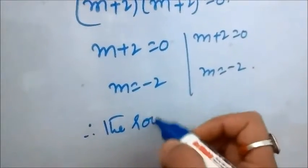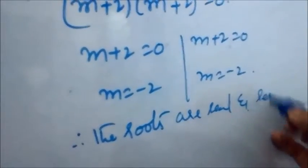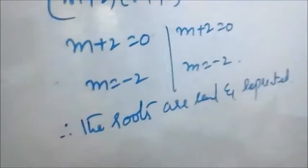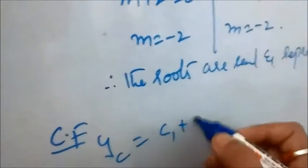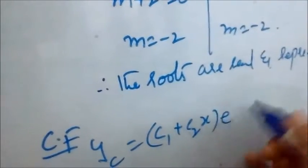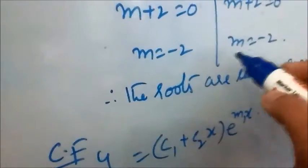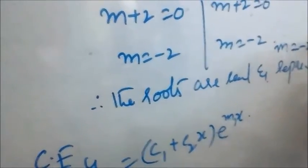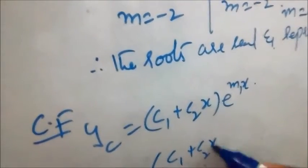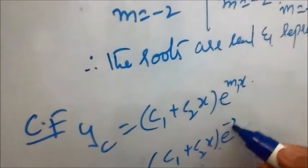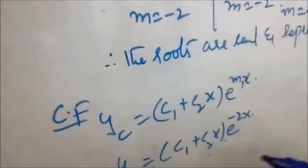Since the roots are real and repeated twice, our complementary function will be: CF: y_c = (c1 + c2·x)·e^(-2x). Now we have to find the particular integral. When we add the CF and PI, we get the general solution.